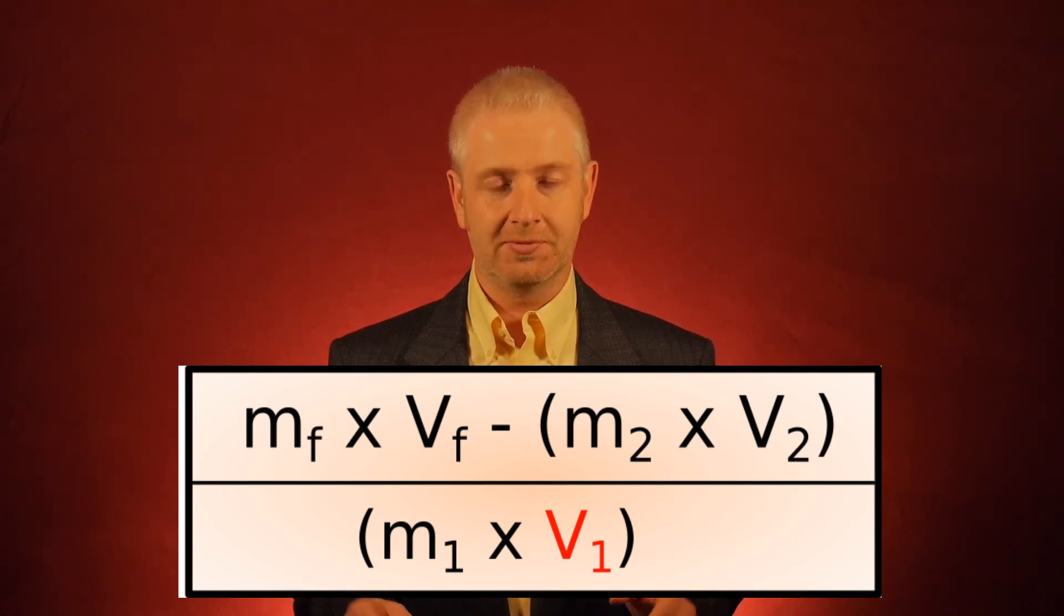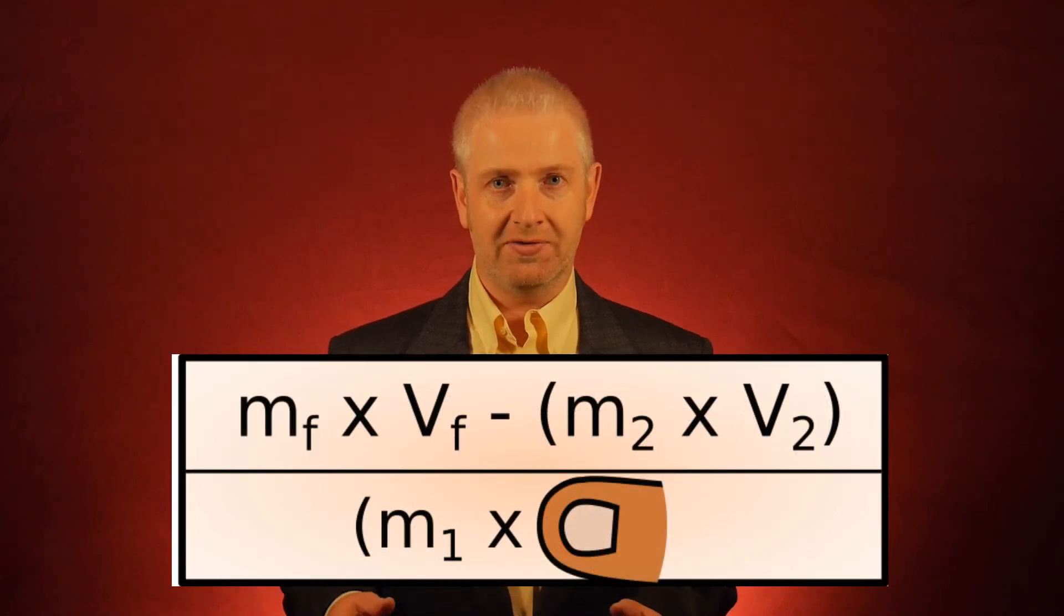No, it's on the bottom. So my rule number two I don't need to worry about. Immediately I can just cover it over. I want to find V1, cover it over. V1 equals Mf times Vf minus M2 times V2 all divided by M1.